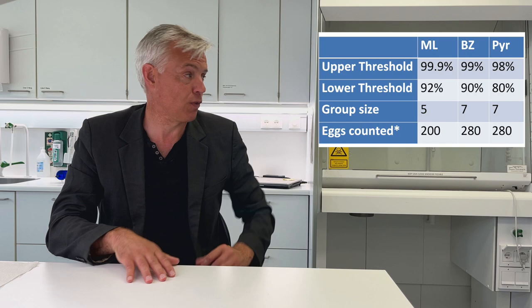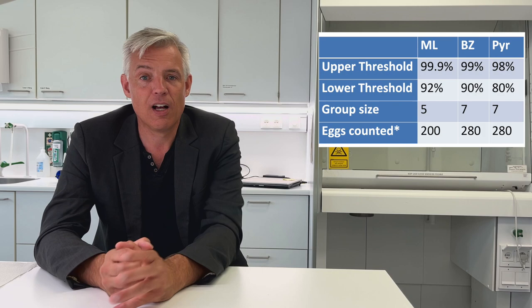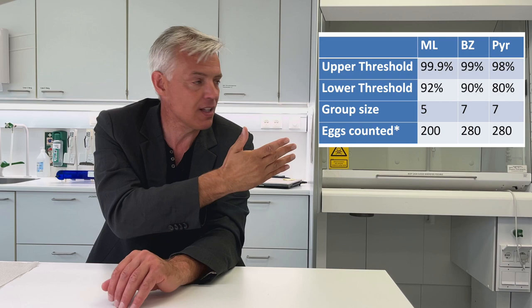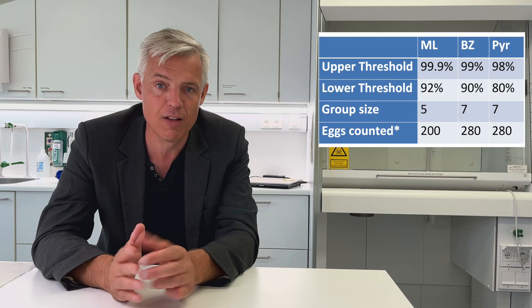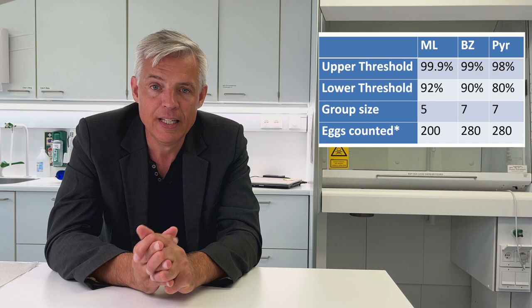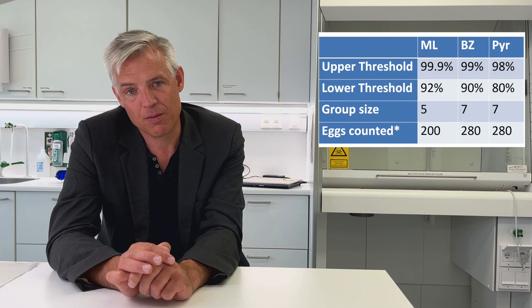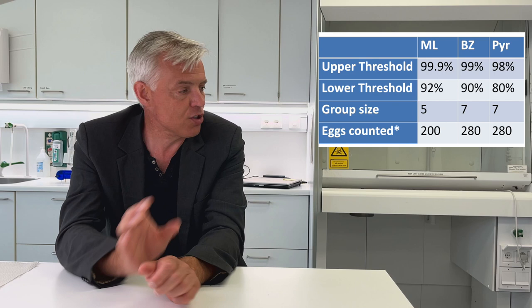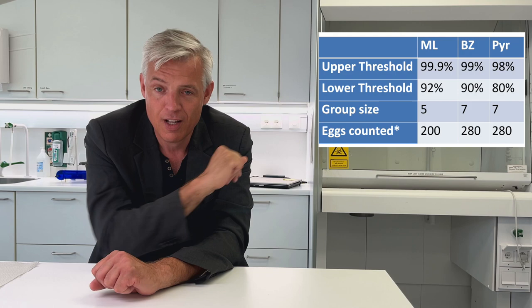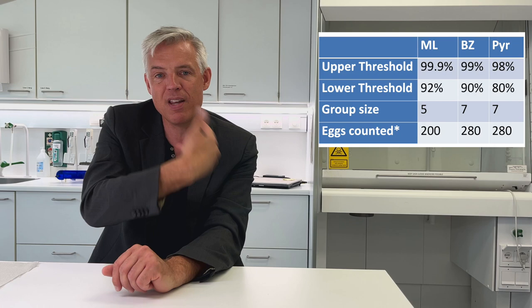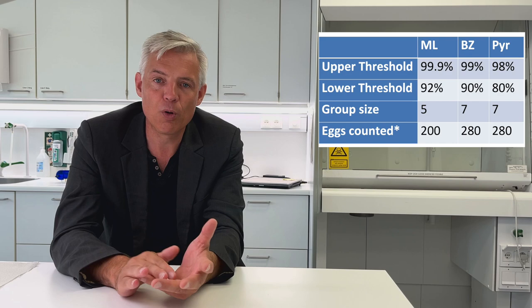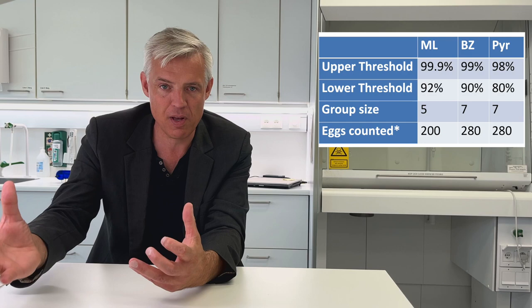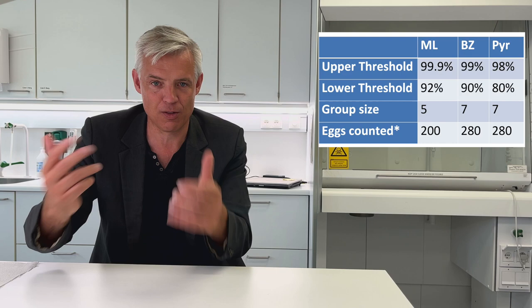Looking at the thresholds table for strongyles across the three drug classes: the expected efficacy level is higher for ivermectin and moxidectin than for the pyrimidines. Because of these different efficacy levels, the number of eggs required to be counted per group also differs — 200 for macrocyclic lactones and 280 for the other two classes. The minimum number of horses needed is five for macrocyclic lactones and seven for the other two groups.